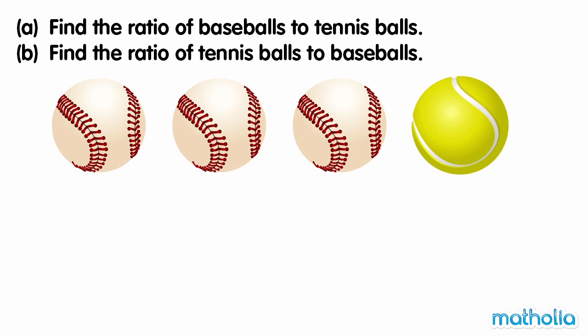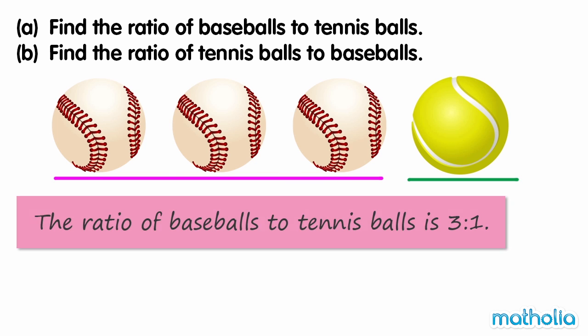Find the ratio of baseballs to tennis balls. There are three baseballs and one tennis ball. The ratio of baseballs to tennis balls is three to one. Find the ratio of tennis balls to baseballs. The ratio is expressed in reverse order, so the ratio of tennis balls to baseballs is one to three.